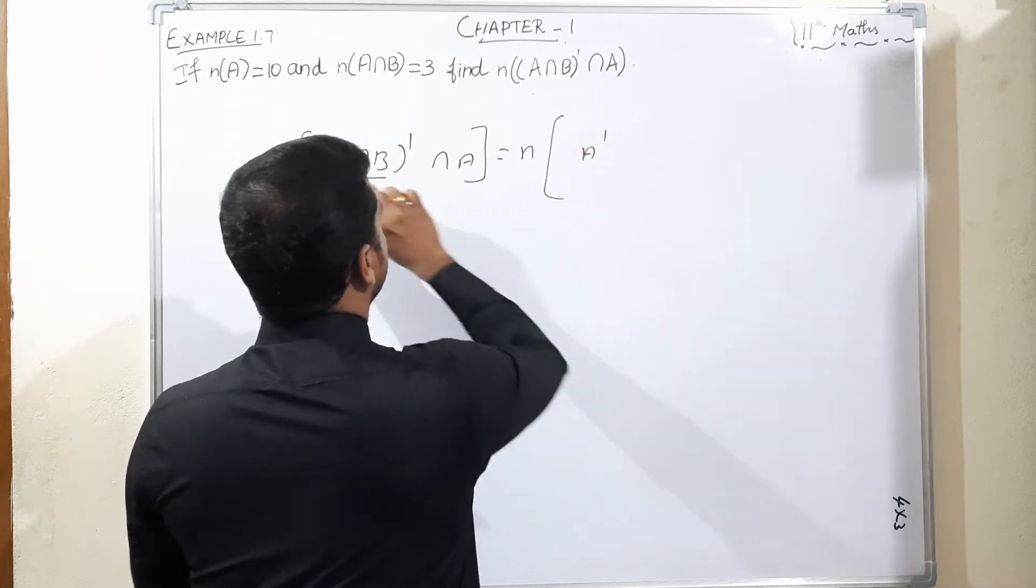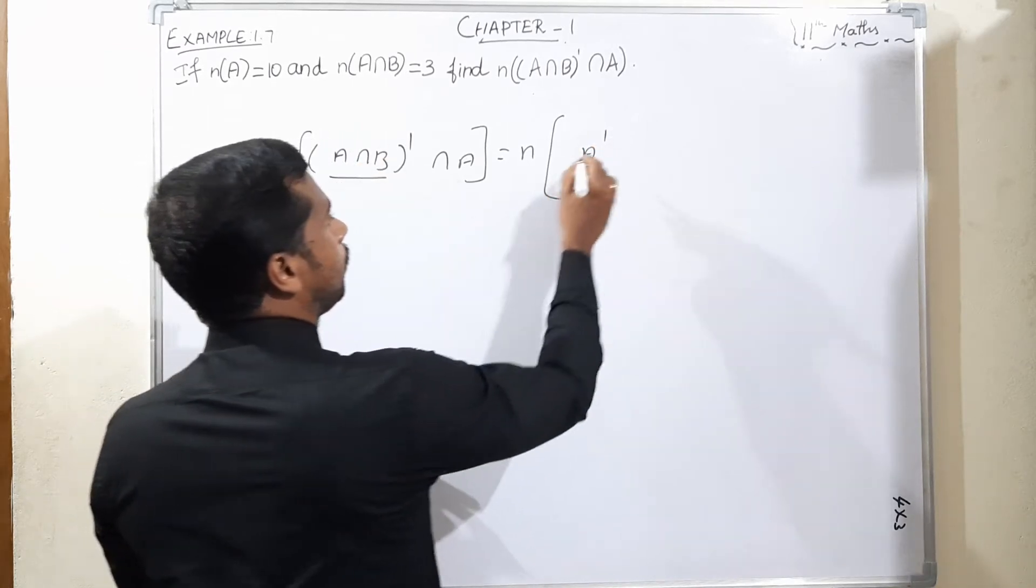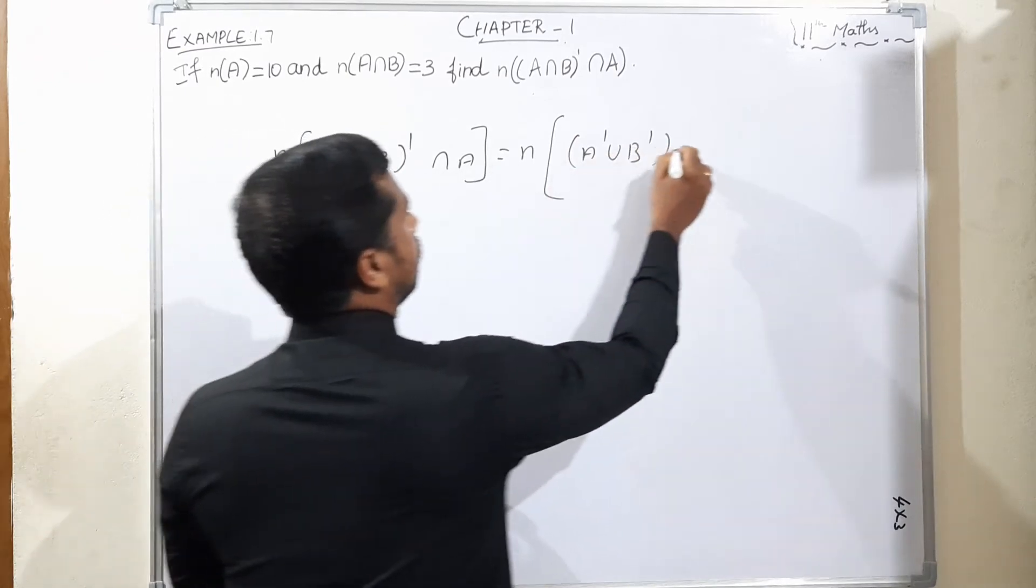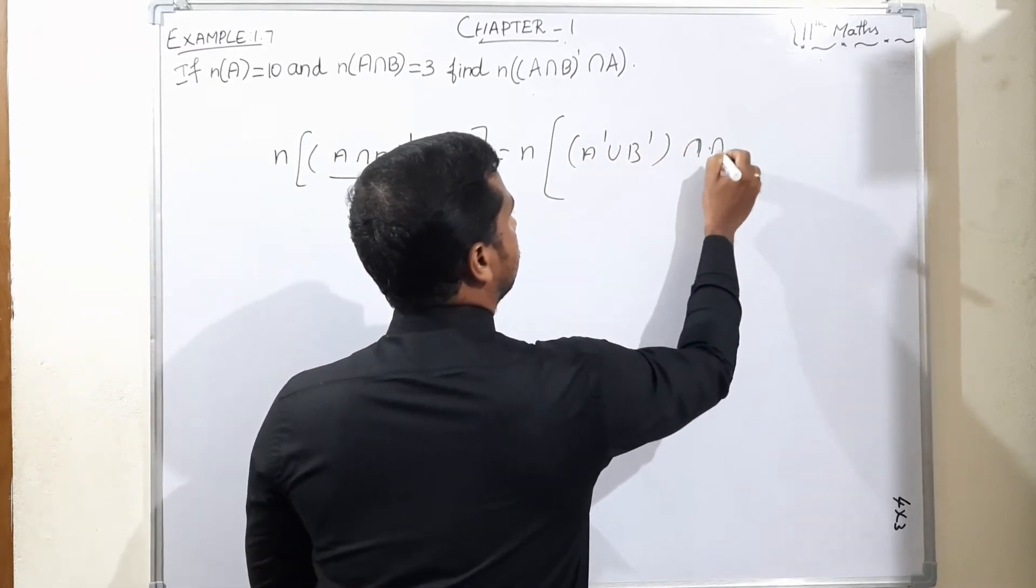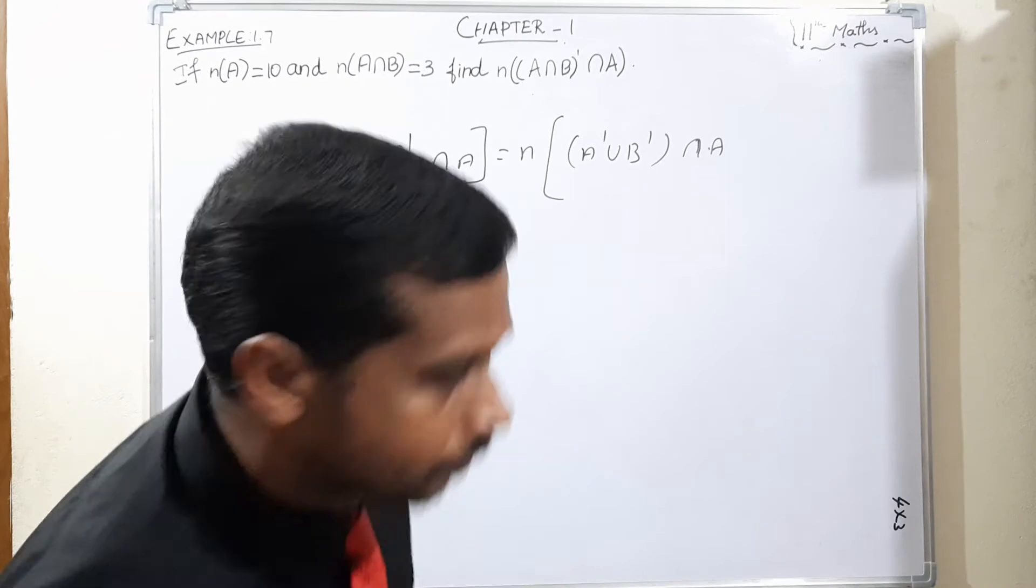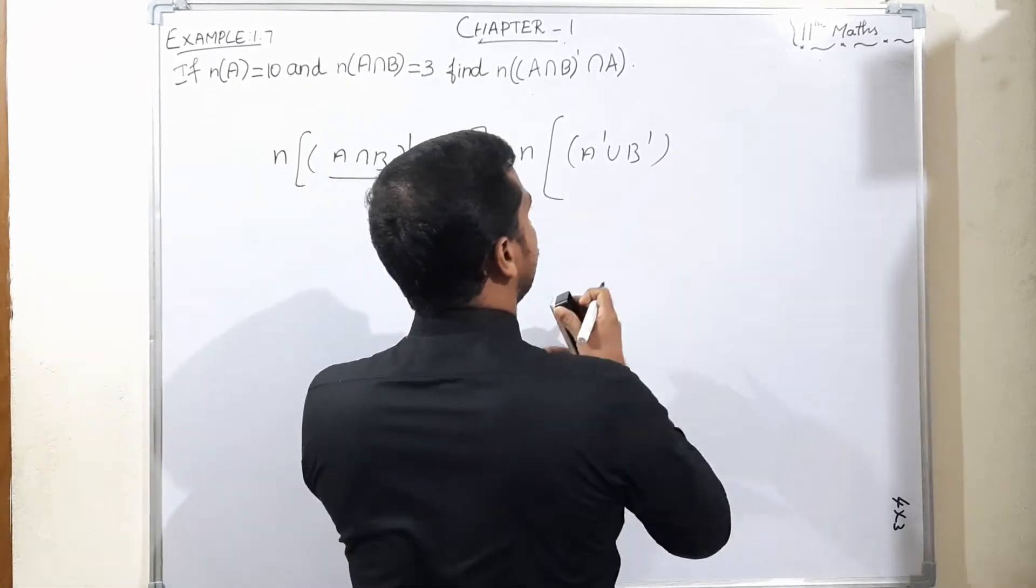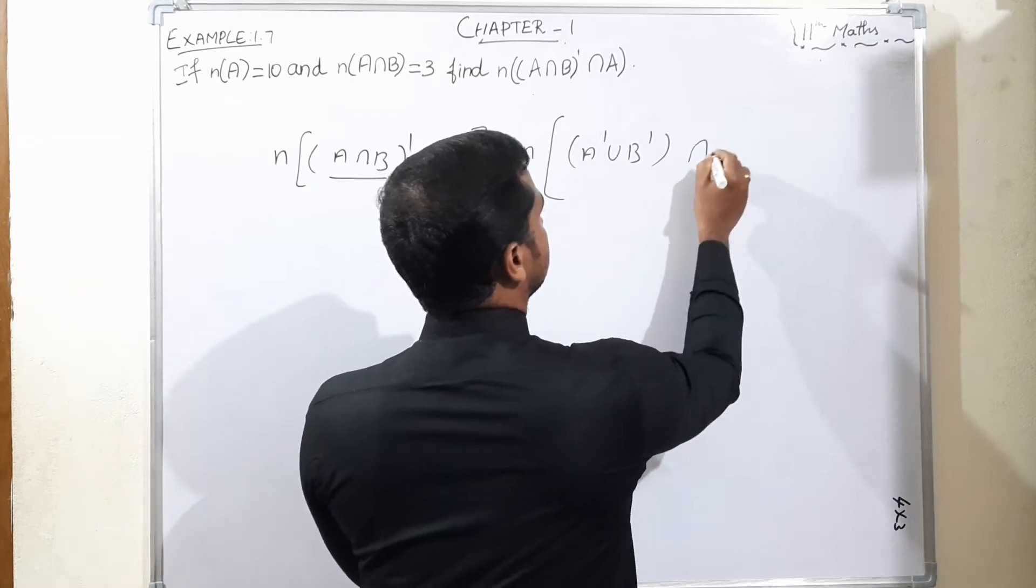Using De Morgan's law, (A∩B)' changes to A' union B', then intersection A. We will find this step by step.